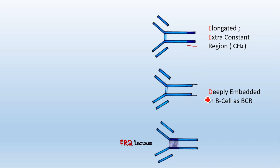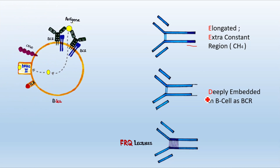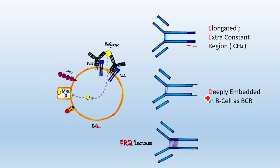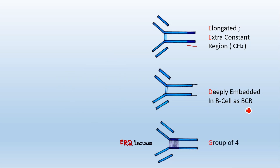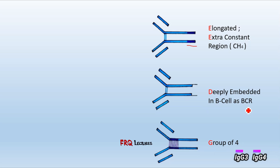If we talk about IgD, it is deeply embedded in B cells. We know there are T cells and B cells, also known as T lymphocytes and B lymphocytes. If we specifically talk about B lymphocytes, they have surface antibodies on their outermost boundary, and the most common surface antibody is IgD. So IgD is deeply embedded in B lymphocytes as the B cell receptor (BCR). Then IgG — 'G for group of four' — has four subclasses: IgG1, IgG2, IgG3, and IgG4.